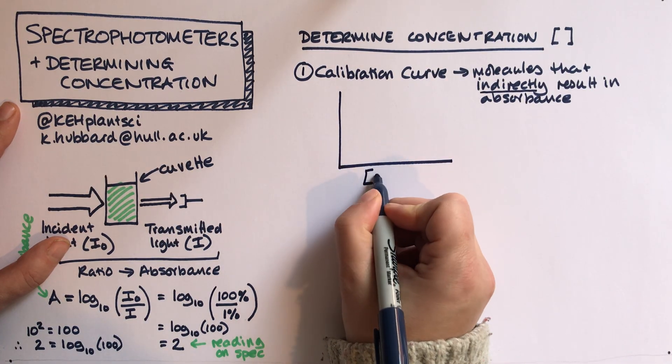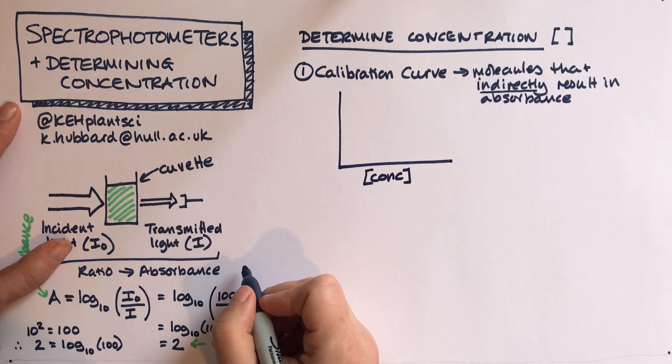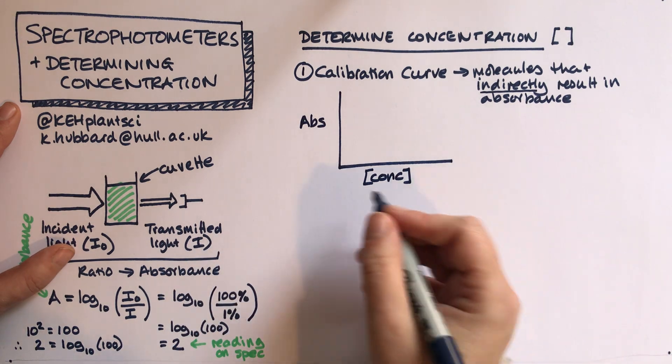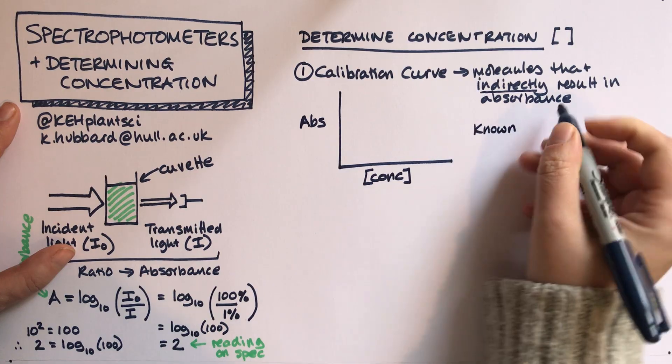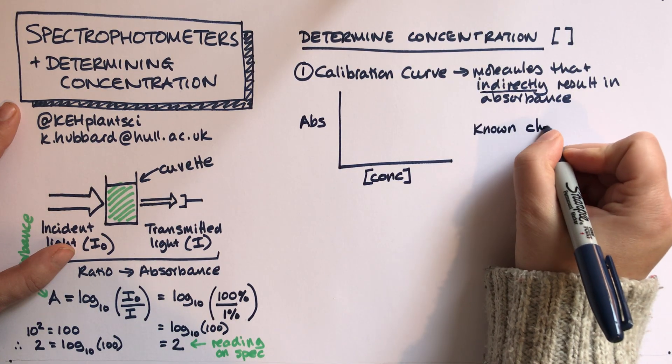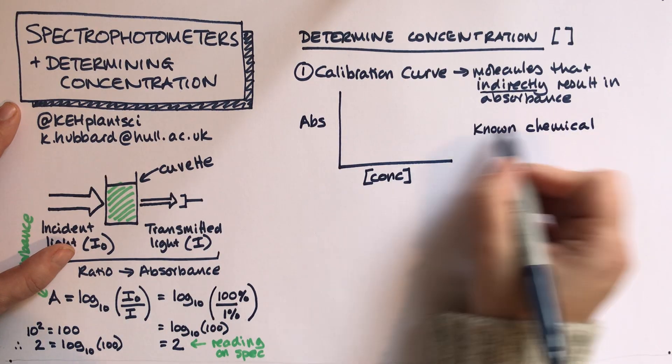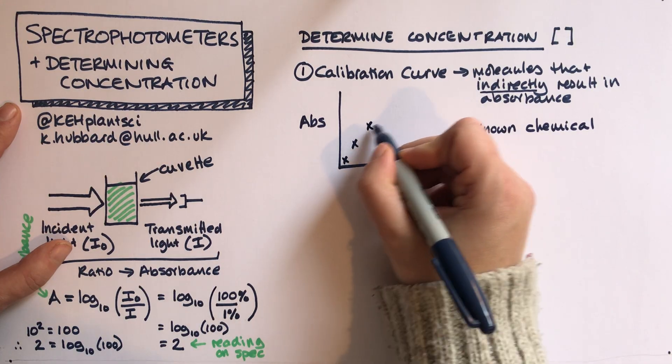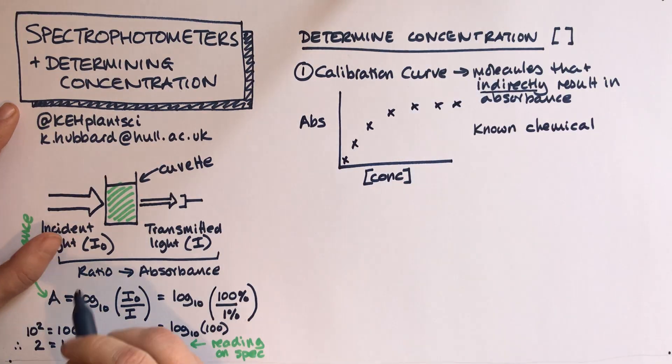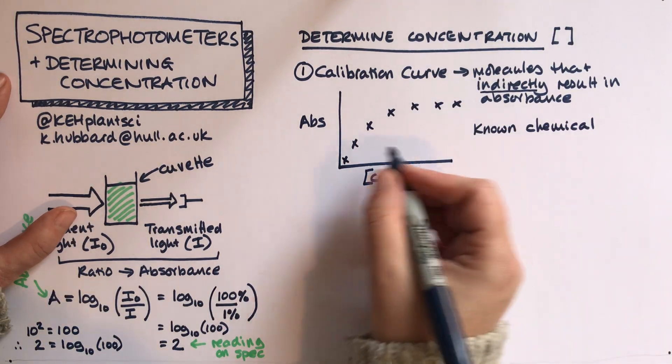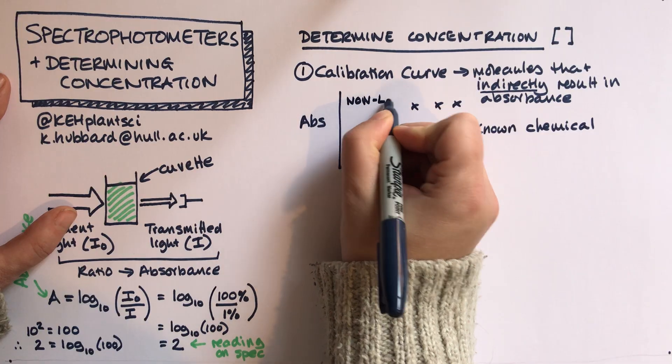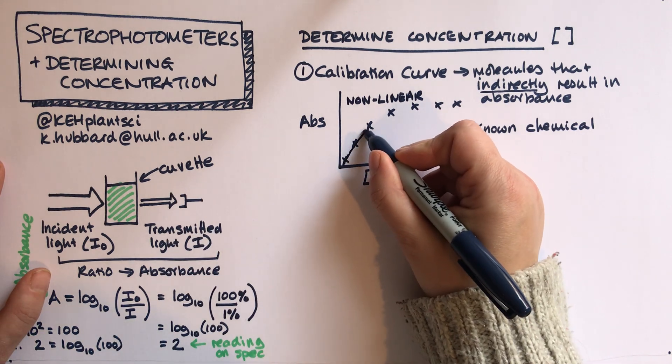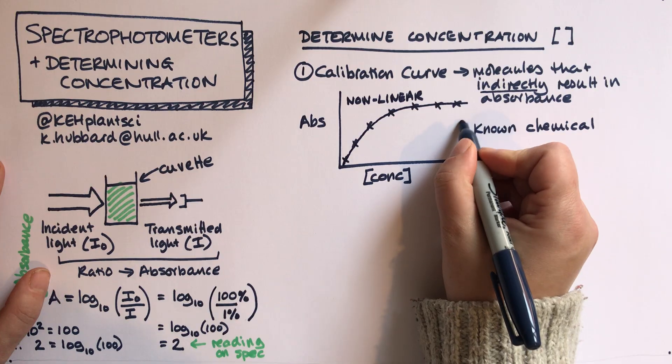That would look like this: we'd have the concentration of the molecule that we're interested in and then we'd have the absorbance. Then we'd start with some known chemical, maybe a serial dilution of the chemical that we're interested in, and then we'd measure its absorbance and plot out a graph that might look something like that. So it's non-linear, and then we'd construct this calibration curve.